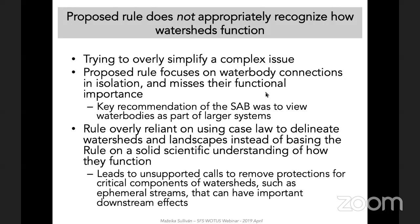The proposed rule also fails to sufficiently account for the cumulative effects of water body connectivity — a key point raised by the SAB. It is critical to consider water bodies in aggregate: functional groups of streams, floodplains, floodplain wetlands, and non-floodplain wetlands, in order to evaluate connectivity and understand downstream effects. As an analogy, if you break one finger in your hand, you may still be able to use it, but if you break multiple or all your fingers, the functions performed by your hand are lost. Water body connectivity and water quality are complex issues that cannot be oversimplified. The proposed rule relies overly on case law rather than a solid understanding of water body connectivity and the complexity of drainage networks, landscapes, and watershed processes. Further justification for the proposed rule draws on findings from the connectivity report and SAB review, yet some interpretations are misleading and taken out of appropriate context.